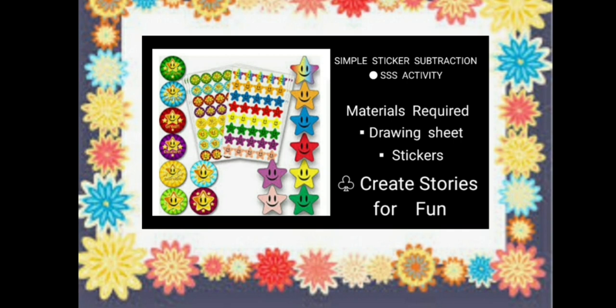As I say a number, count and paste stickers to represent the same number on a drawing sheet. When I say the second number, listen carefully and remove and take off that many number of stickers. Put it aside. Find and count the number of stickers that you are left with. So let's first take up the first number. Paste 4 stickers on your drawing sheet. Now, you decide to take away and give 2 to your mummy.